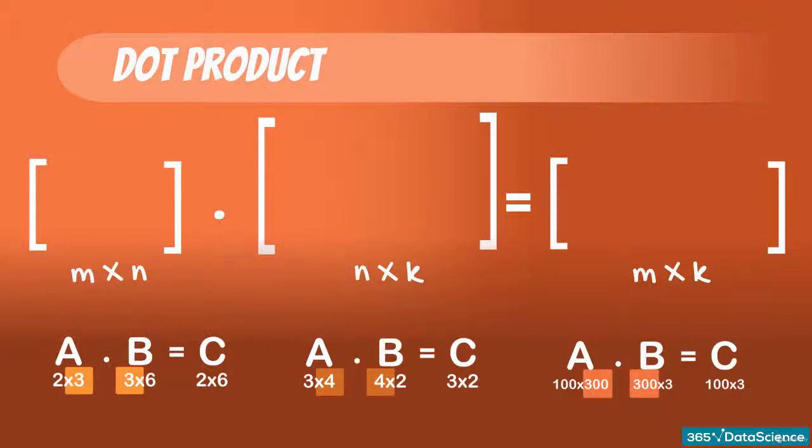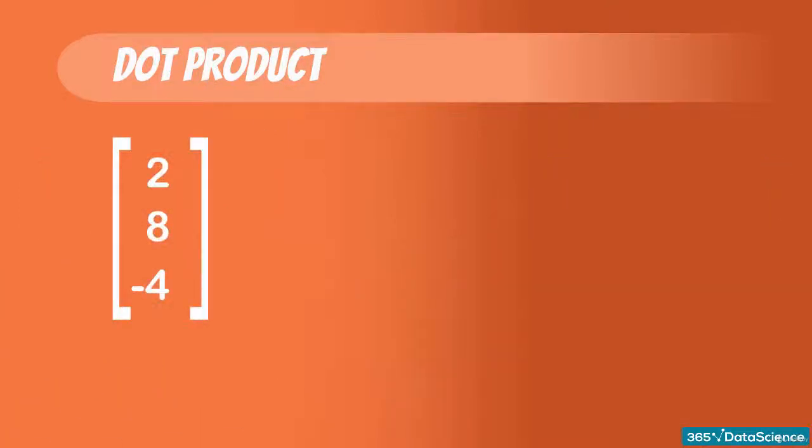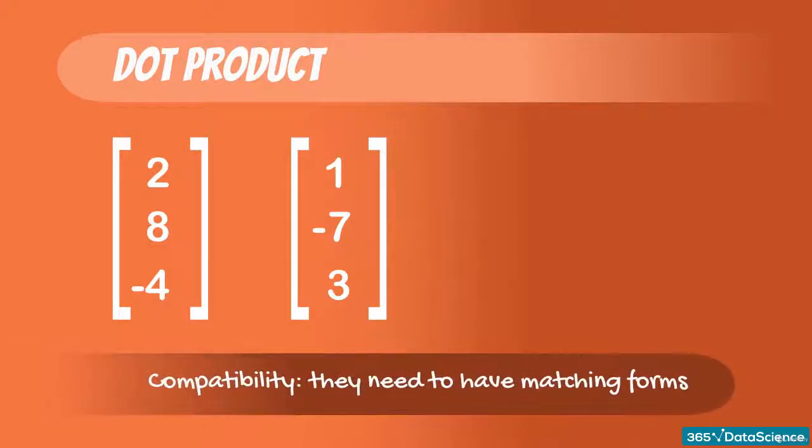Okay, now we know the compatibility measure. How do we actually multiply matrices then? Let's start with two matrices, 2, 8, minus 4, and 1, minus 7, 3. Actually, these are two vectors, or 3 by 1 matrices, right? In order to multiply them, they need to have matching forms.